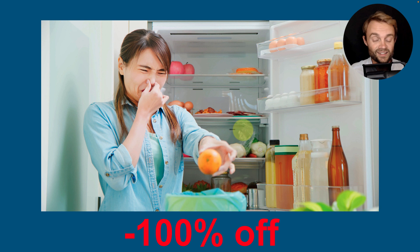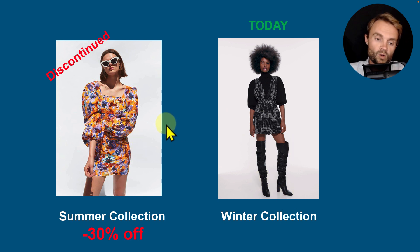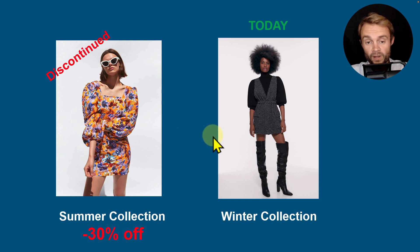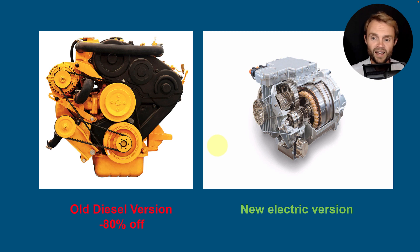If you cannot sell obsolete products, you still have to pay for them — logistics, inventory costs — and at the end you lose up to 100% of the value, or even more if you pay for destruction. In the fashion industry, for example, a summer collection becomes obsolete when winter arrives; you have to do 30–50% promotions, which is a big cost. In the industrial sector, like diesel engine parts where everyone is switching to electric, you may face 80–90% promotions — again a major impact on profitability.